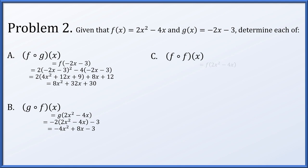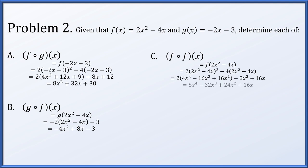For f of f of x, we take f of x — 2x squared minus 4x — and plug it into f. We square that input, multiply by 2, and subtract 4 times it. After expanding, distributing the negative 4, multiplying by 2, and collecting like terms, we get 8x to the 4th minus 32x cubed plus 24x squared plus 16x.